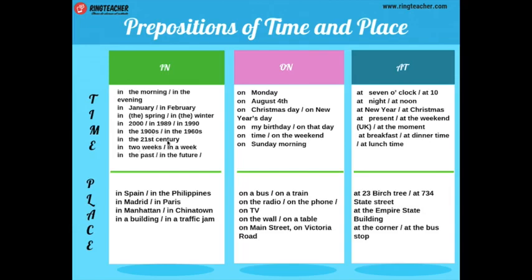También pueden usarlo con los días de la semana, actividades en el futuro, porque es para el tiempo. Solo tienen que describirlo con in the past, in the future, in two weeks, in a week — en una semana, en dos semanas, y así sucesivamente. Ya vimos cómo usar la preposición in.